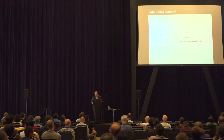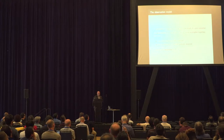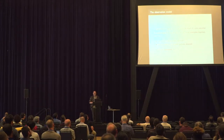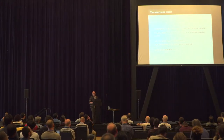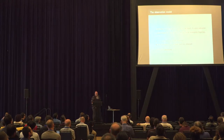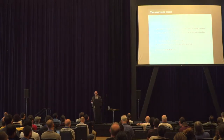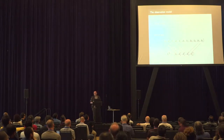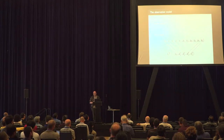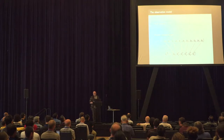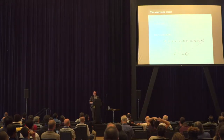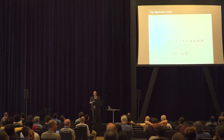We follow a probabilistic approach that ranks higher models requiring fewer changes to explain the observation. Model recognition can be understood as a classification task where classes are defined as plan models, and the example to classify is the partial observation of a plan execution. In our observation model, we define a trajectory as the interleaved sequence of states and actions from plan execution, and an observation as an incomplete trajectory where the initial state is fully known and the final state is at least partially observed. A trajectory and an observation are consistent if the observation is a subsequence of the trajectory.